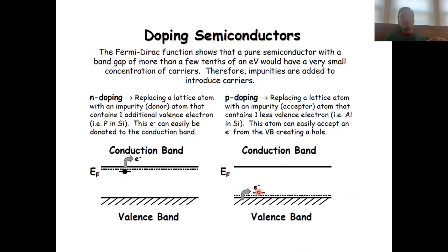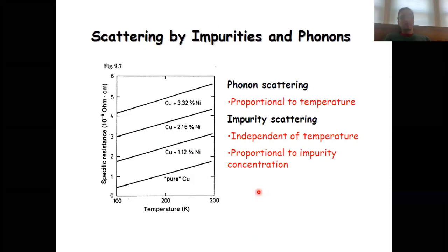So this is what n-doping and p-doping does. I wanted to mention two more aspects of electronic conductivity in extended solids. The first one is the influence of impurities in metals. We've seen that in semiconductors, doping actually increases the electronic conductivity. However, when we introduce the same impurities into metals, that decreases the electronic conductivity.